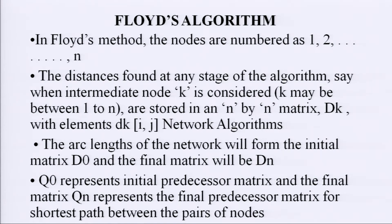Floyd algorithm: nodes are numbered 1, 2, 3, 4 up to n. The distance found at any stage of the algorithm, where the intermediate node k is considered (k may be between 1 to n), is stored in an n-by-n matrix D(k) with elements D(k,i,j). The arc lengths of the network form the initial matrix D(0) and the final matrix is D(n). Q(0) represents the initial predecessor matrix and the final matrix Q(n) represents the final predecessor matrix for the shortest path between pairs of nodes.